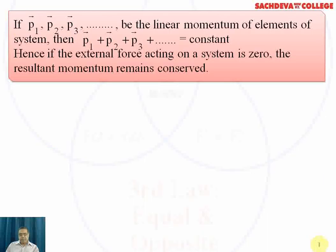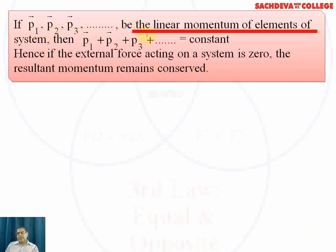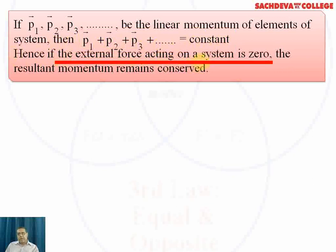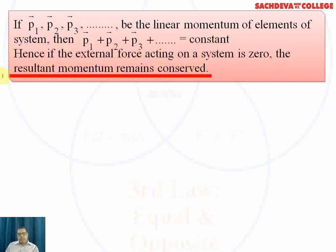We assume that p1, p2, and p3 are the linear momenta of the elements of a system. Their sum remains constant. Hence, if the external force acting on a system of many particles is zero, the resultant momentum of the system remains conserved.